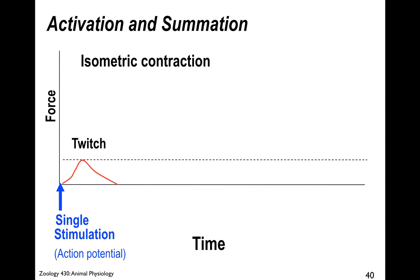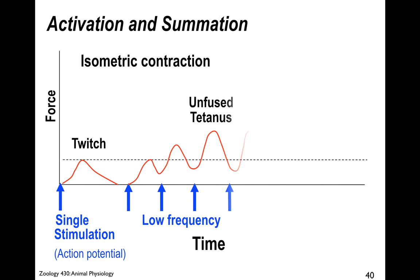In a vertebrate, a single stimulation or action potential is a twitch. With low-frequency multiple stimuli you get an unfused tetanus that starts to grow, and with higher-frequency stimulation you get a fused tetanus — that's when you get the maximum isometric contraction. You'll be looking for tetanus while measuring EMGs on yourselves.